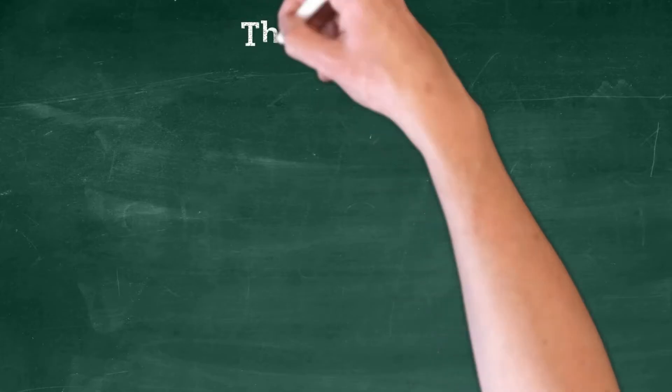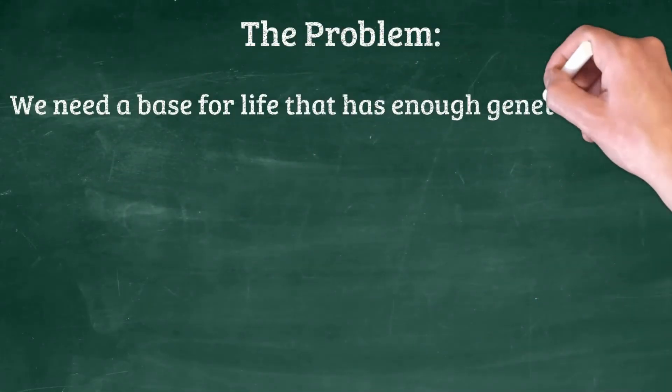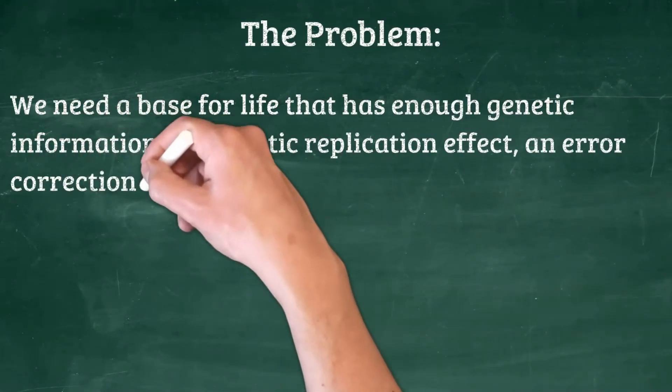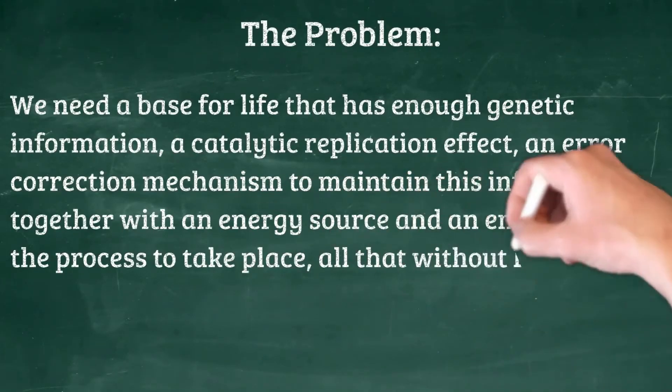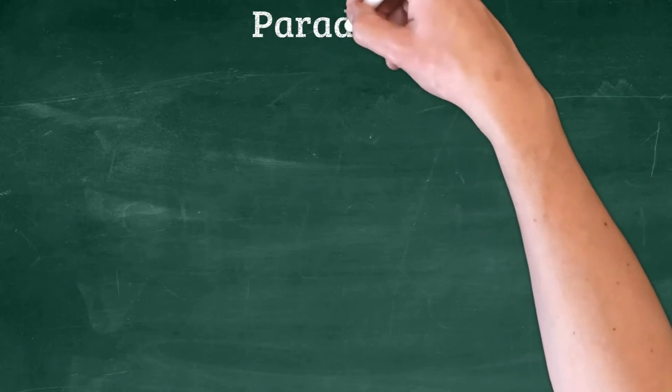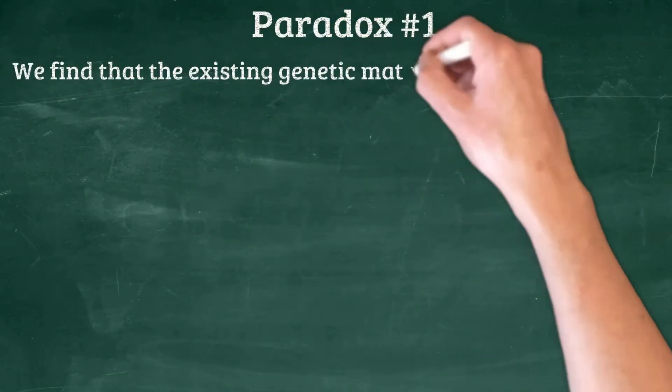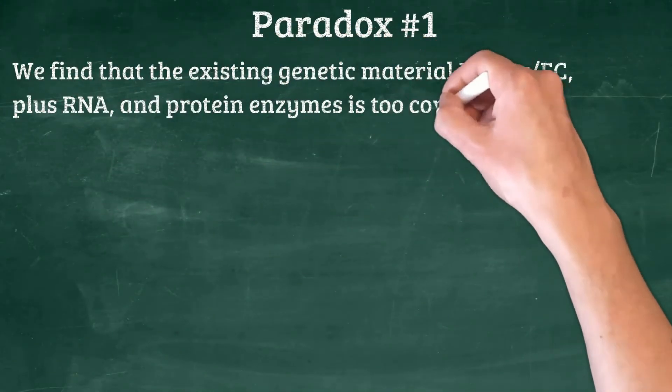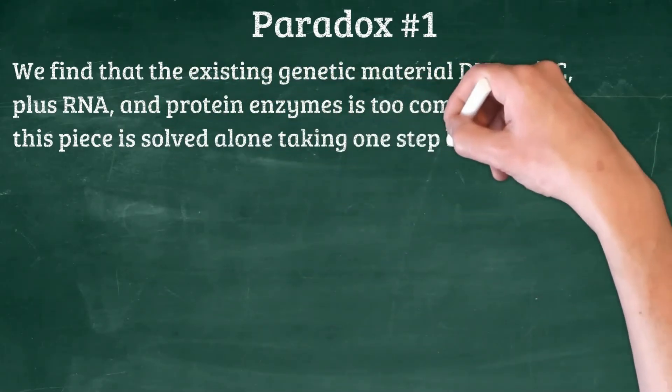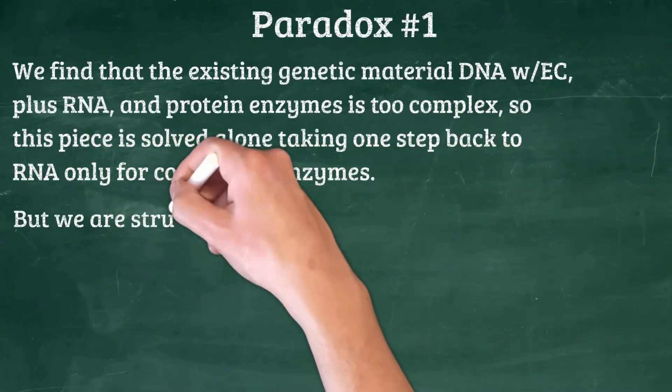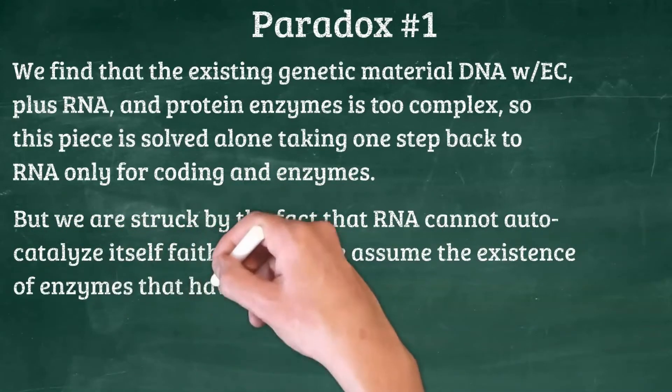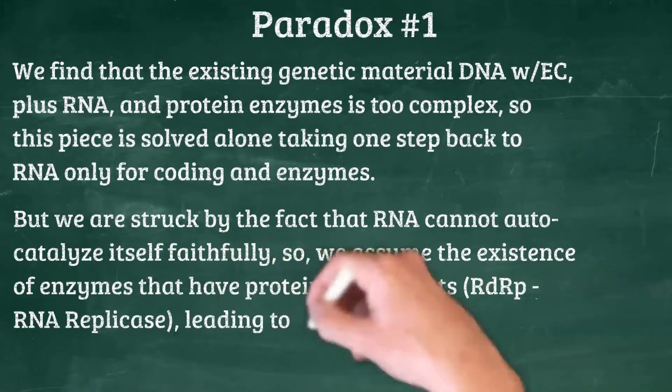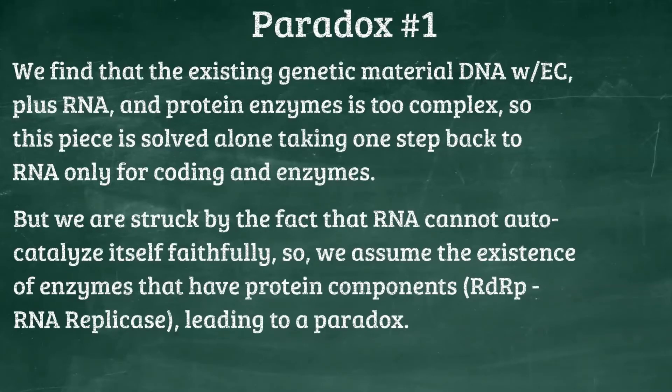Before I leave you, let's look at the summary for the four paradoxes of the RNA world hypothesis. What was the problem we were trying to solve? The problem was that we need a world in which genetic material is stored, is replicated, with an energy source and a cell membrane, but without DNA. So paradox number one: we know that the existing life uses DNA with error correction plus RNA and protein enzymes, which is too complex. And we try to solve it by going a step back for RNA. But then we need to have RNA replication and we know a long strand of RNA cannot autocatalyze. So we end up needing RNA replicase to replicate RNA. But guess what? RNA replicase is a protein. It is a paradox given that we said that this is the RNA world.